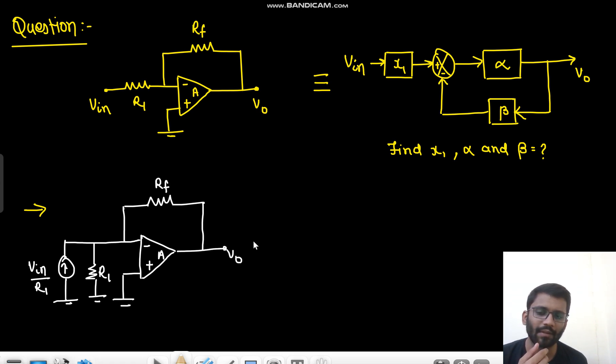So basically if we make the block diagram for transresistance amplifier. What is that? We have studied the block diagram for transresistance amplifier, or I should better write it as voltage-current topology. We shouldn't say transresistance amplifier, we should say voltage-current topology. So what is the block diagram for voltage-current topology?